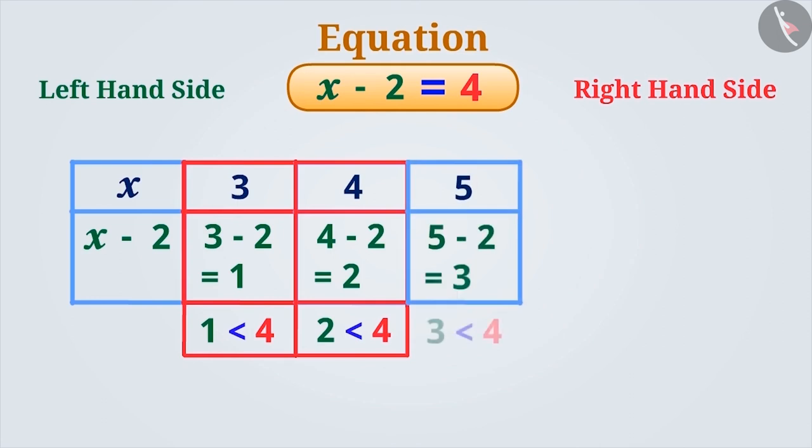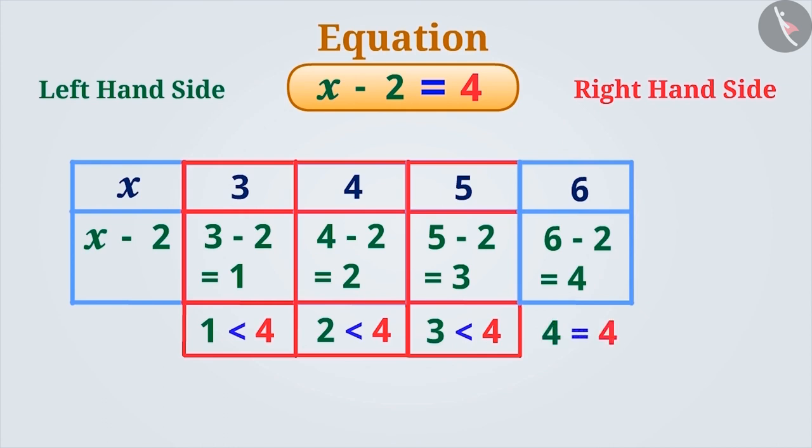Similarly, even if the value of x is 4 or 5, the condition of the equation is not satisfied. But by taking the value of x as 6, we get 6-2 equals 4 on the left-hand side, which is equal to the right-hand side. This satisfies the condition of the equation.